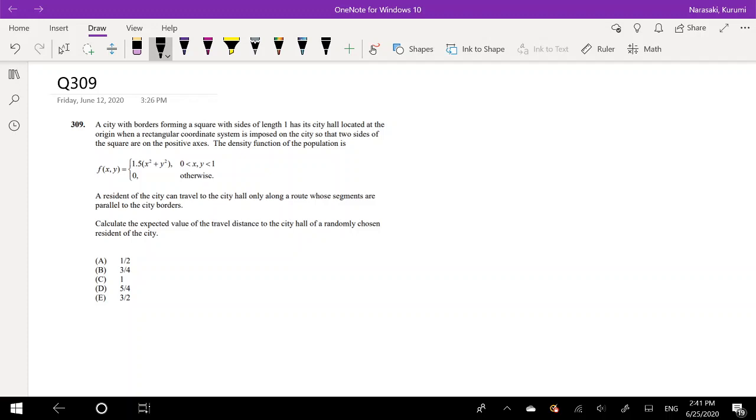A city with borders forming a square with sides of length 1 has its city hall located at the origin, when a rectangular coordinate system is imposed on the city so that the two sides of the square are on the positive axis. The density function of the population is given below.